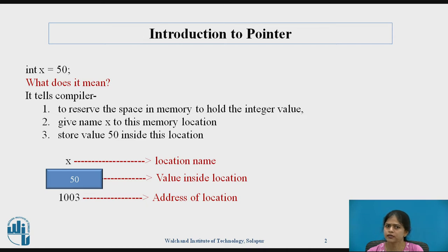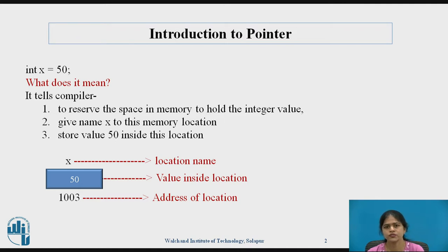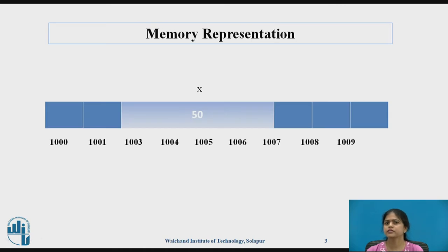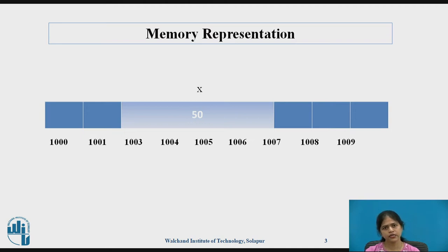Now x is data in a program. Where is this data stored? Data is stored in a random access memory, which is a primary memory. RAM is a collection of memory locations known as cells, and every cell is one byte. Each location of memory has some specific address.